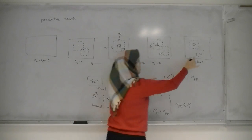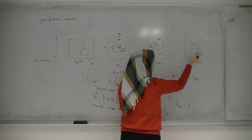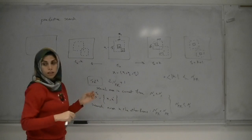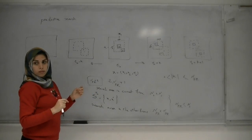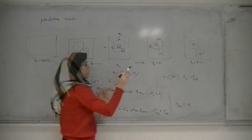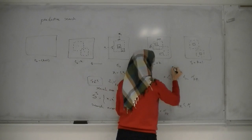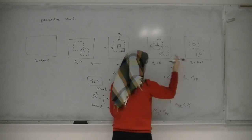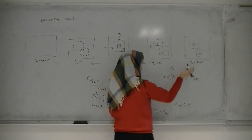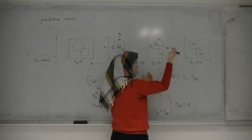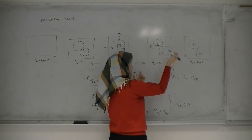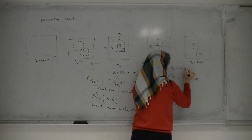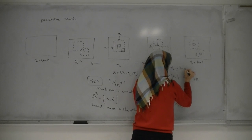We always try to find this block from the previous result. We always try to find the most similar area in frame T0 plus K.